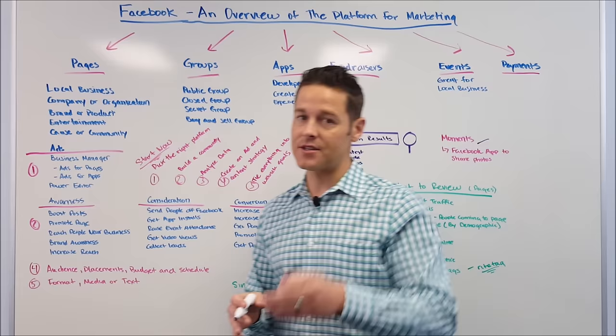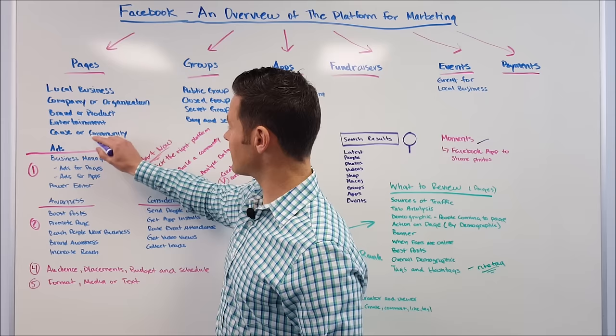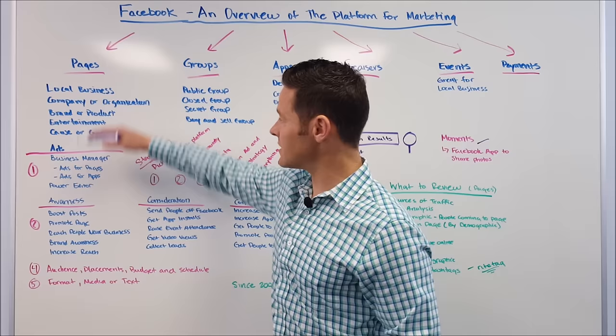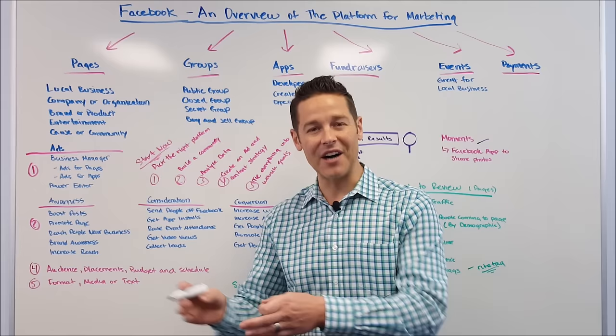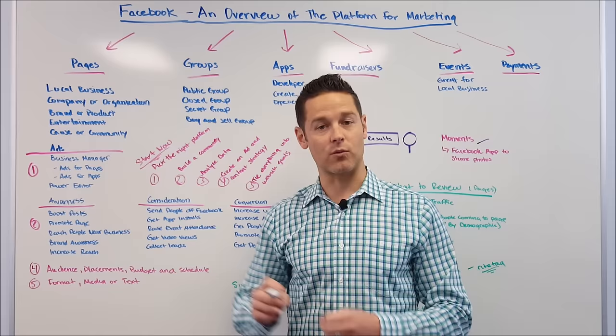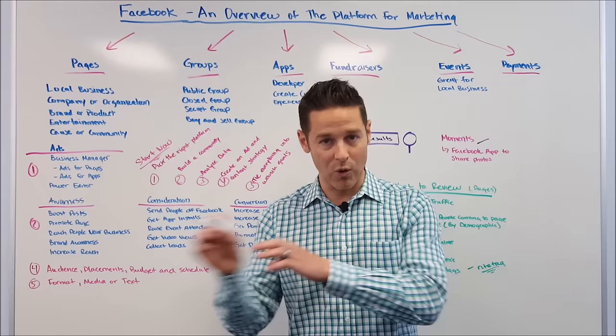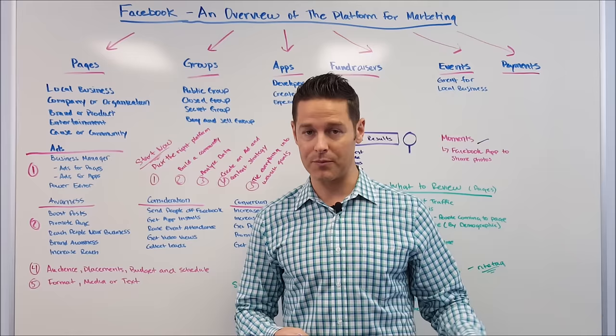From a business perspective, pages are generally the most important thing. Pages are broken down by local business, company, organization, brand or product, entertainment, or cause or community. With pages though, you really don't get a ton of exposure unless you have a big community or a really good edge rank score. Edge rank is critical for Facebook — if you want to be successful and have high engagement, you have to have an excellent edge rank score.